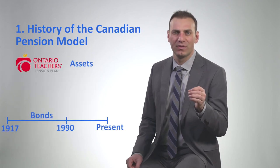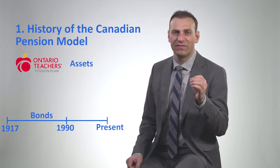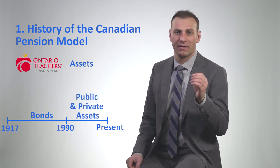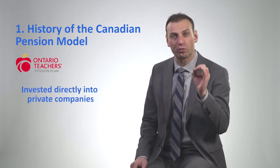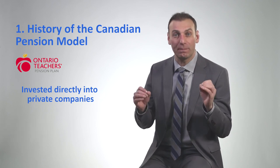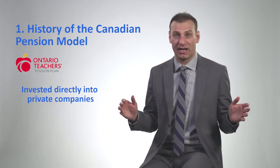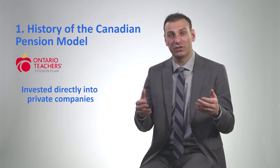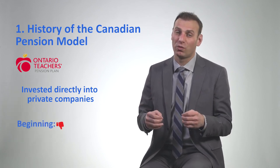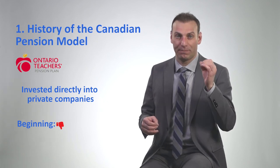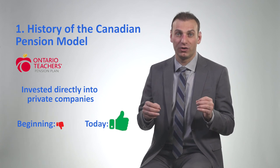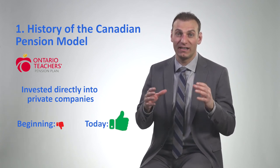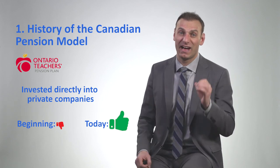In 1990, this privatized entity invested not just in government bonds, but also in public and private assets. What the Ontario Teachers' Pension Plan did — and there's a case by INSEAD about this — is they invested directly into private companies. This was revolutionary at the time to have a pension buy private companies. At first, Ontario Teachers' Pension Plan didn't do so well with their investments, but they learned from their mistakes and they persisted. Today, Ontario Teachers' Pension Plan has one of the biggest direct investing teams on the planet, and they have an excellent track record.